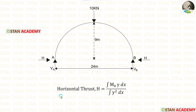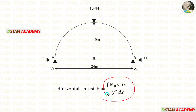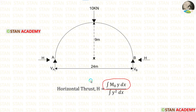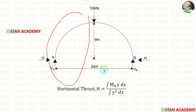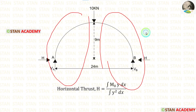For a two-hinged parabolic arch, the horizontal thrust formula is H = (∫M₀·y dx) / (∫y² dx). First, let us calculate the numerator ∫M₀·y dx. For that, we need to make sections in the arch. There are two parts — one before the point load and one after the point load.